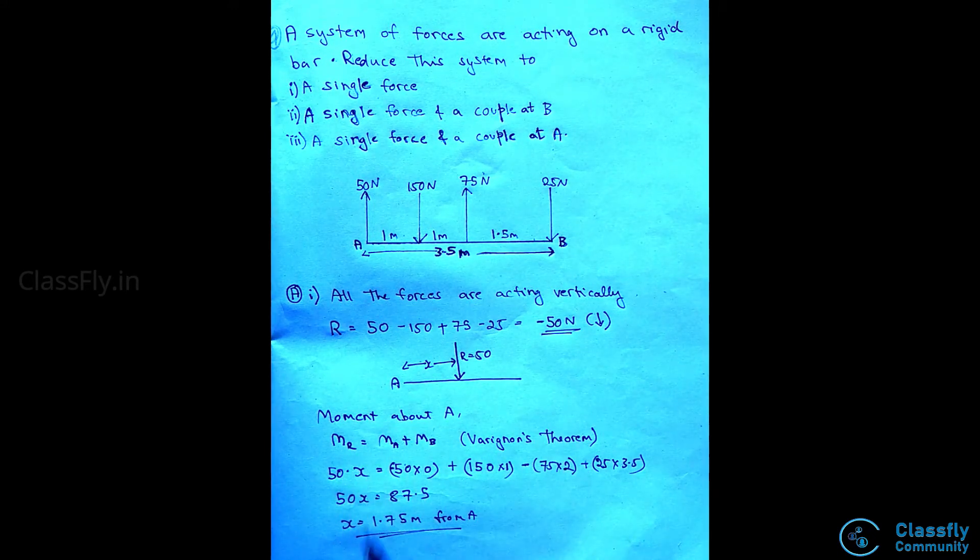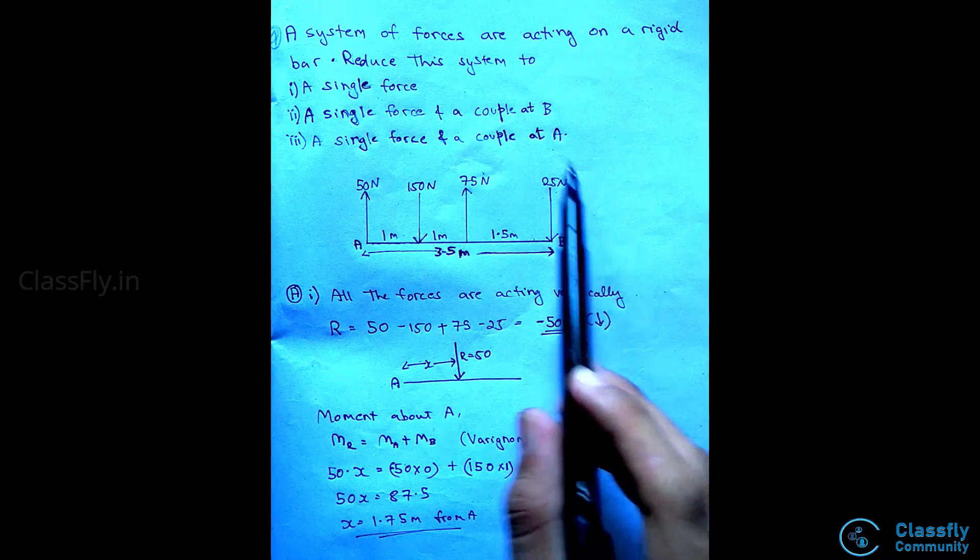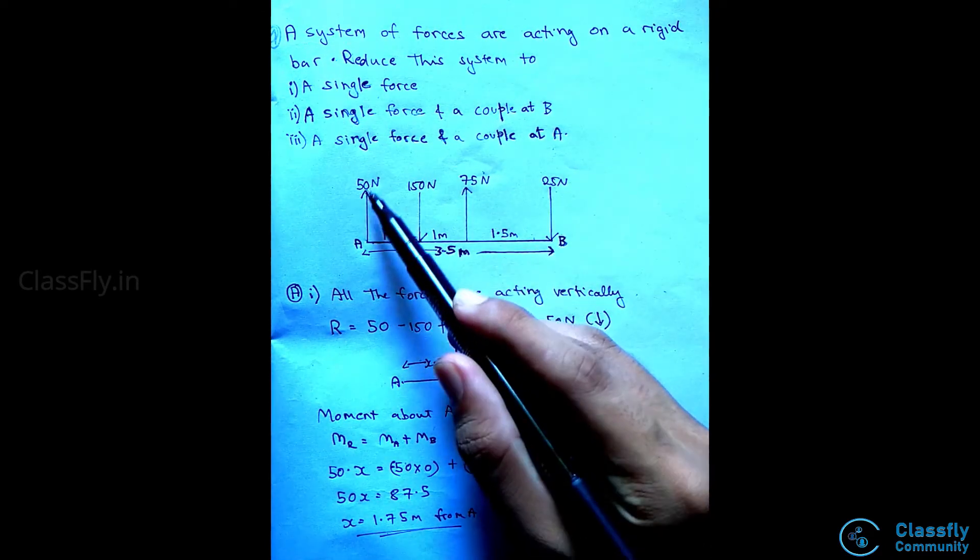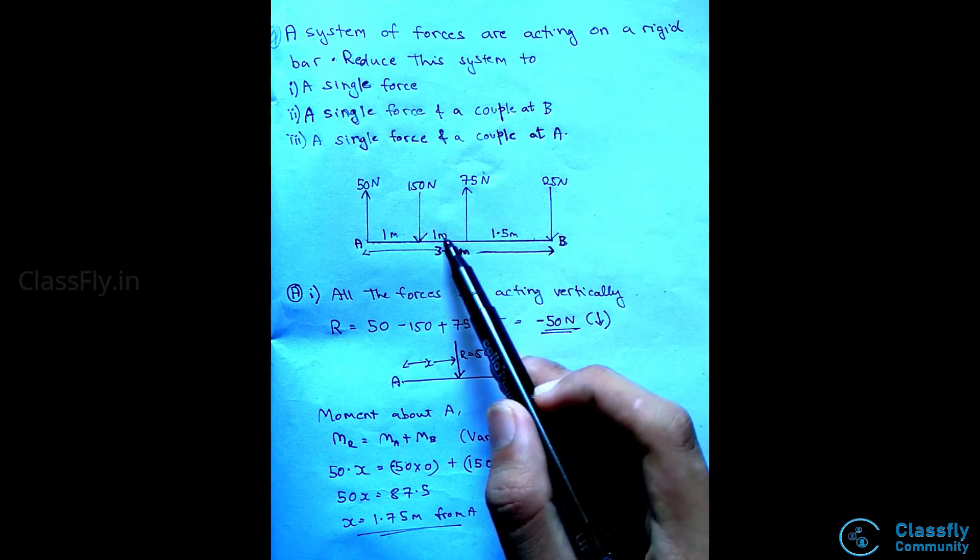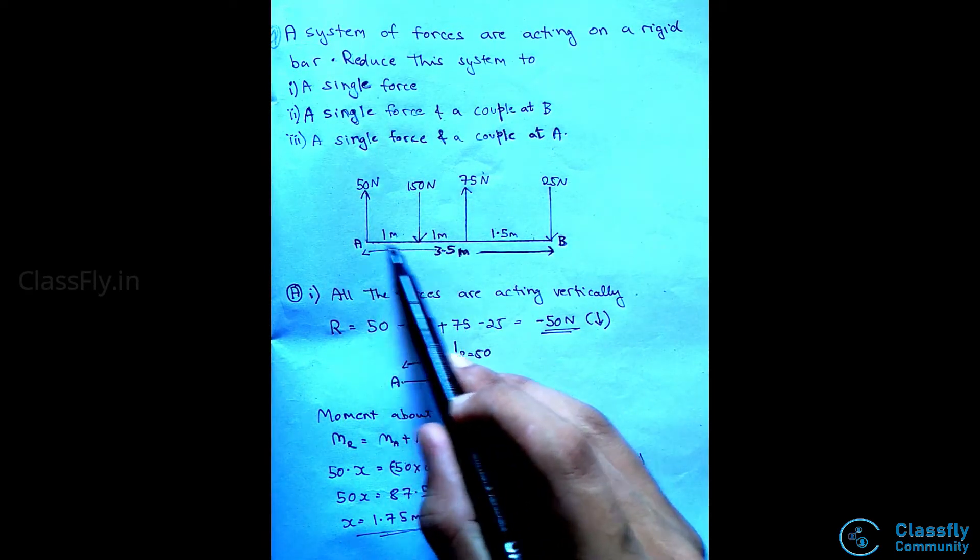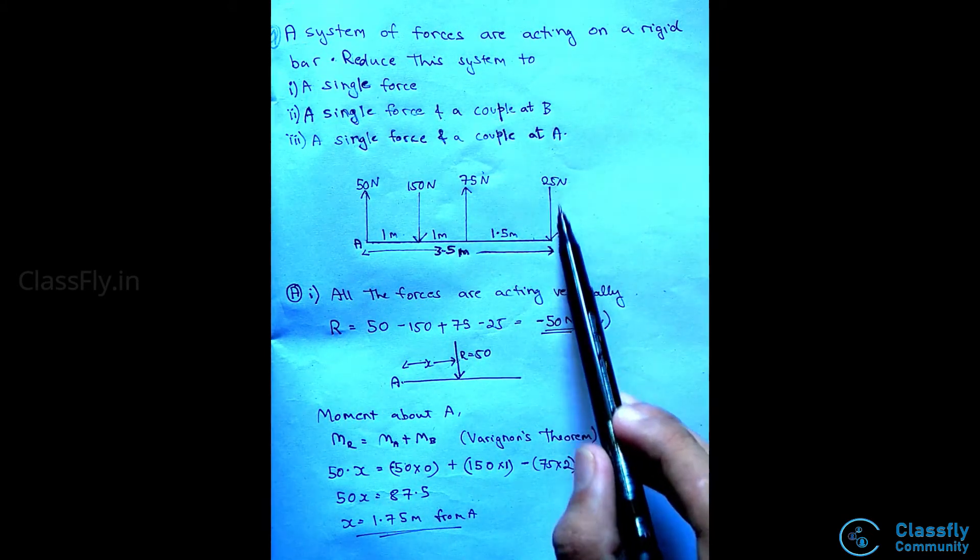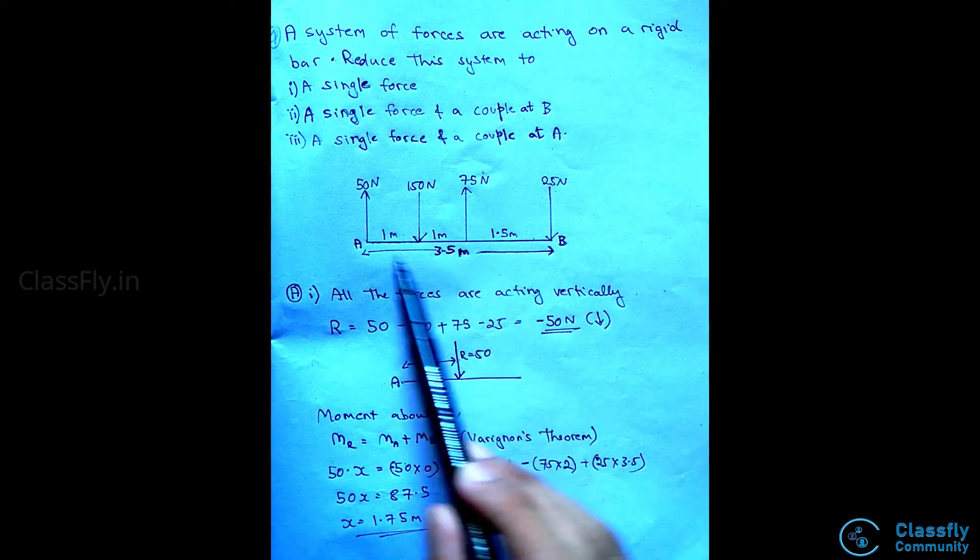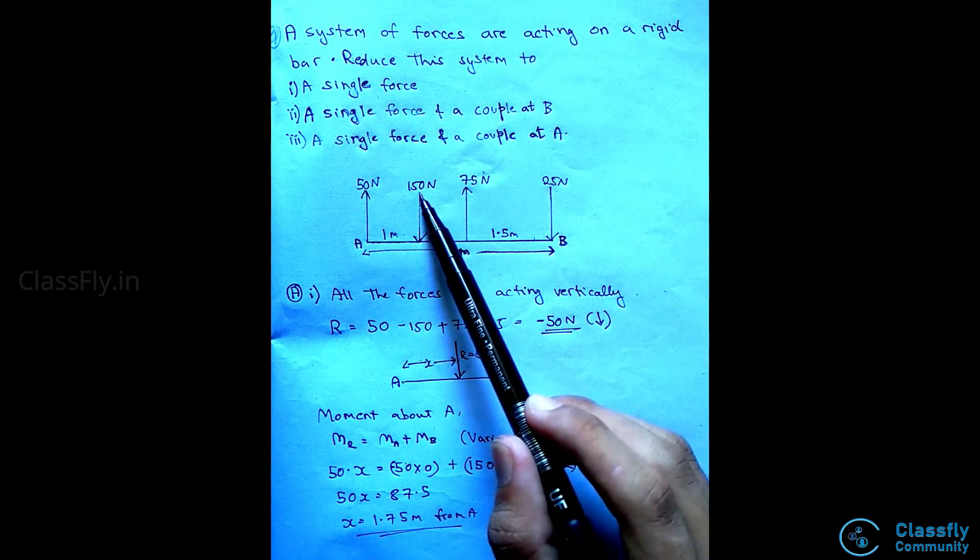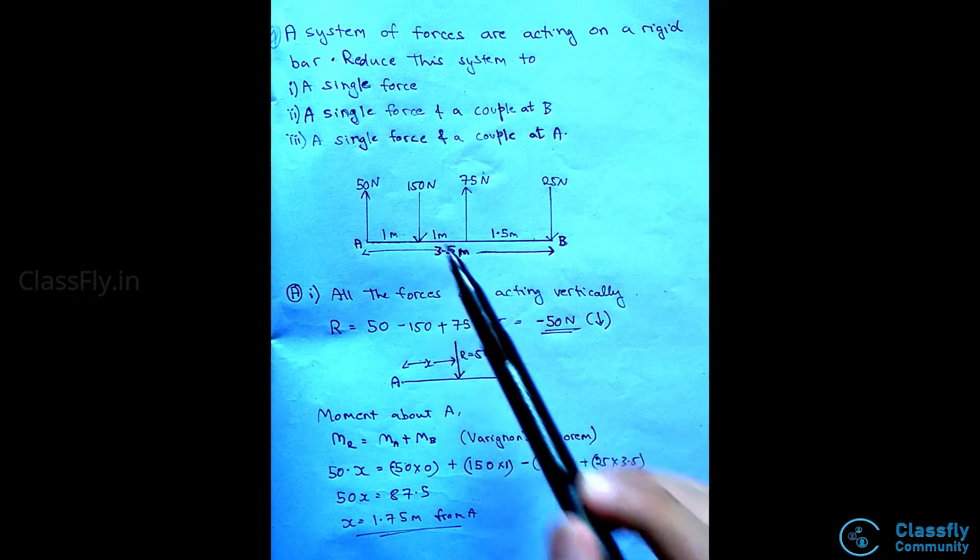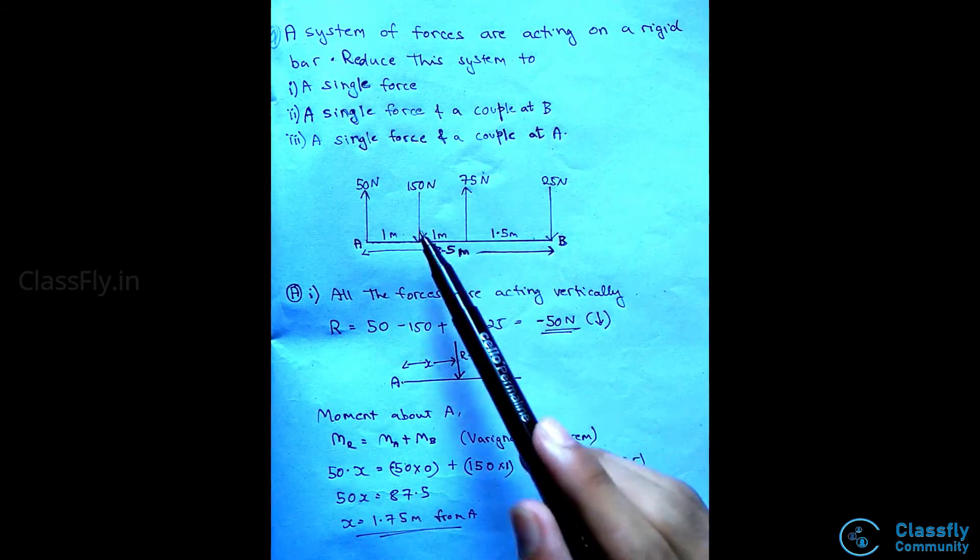Moment of the resultant MR is given by 50 into x, which will be equal to the summation of the moments of the other forces. That is, 50 into 0 as this force is at A, minus 150 Newtons into 1, minus 75 Newtons into 2, plus 25 Newtons into 3.5 meters. When we take forces, forces acting up are taken as positive and downwards as negative. But in the case of moment, it is vice versa.